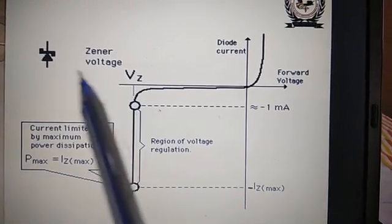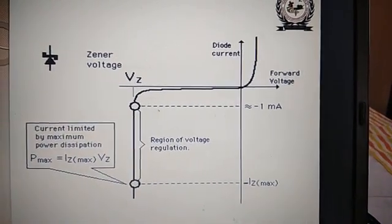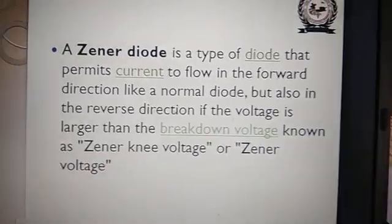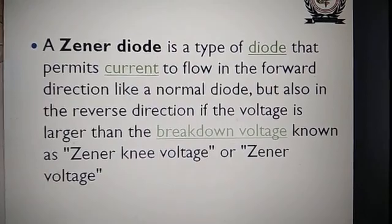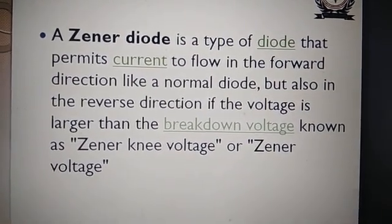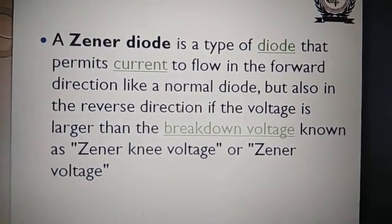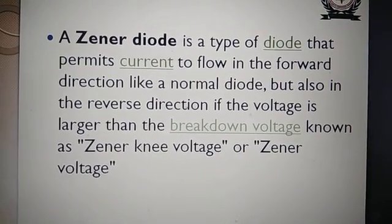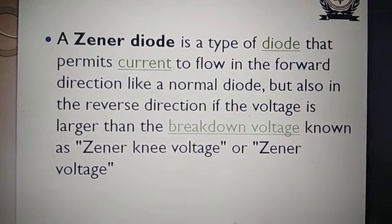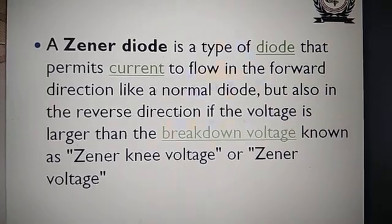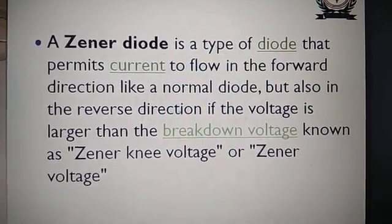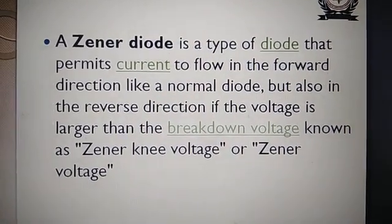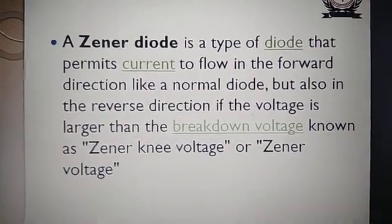The breakdown voltage is also known as the Zener voltage, and it is given by the manufacturer — the Zener diode is particularly designed with this VZ breakdown voltage. A Zener diode permits current to flow in the forward direction like a normal diode, but also in the reverse direction if the voltage is larger than the breakdown voltage, known as the Zener voltage, Zener knee voltage, or breakdown voltage.